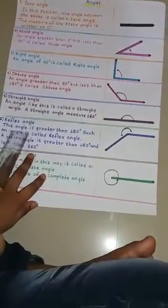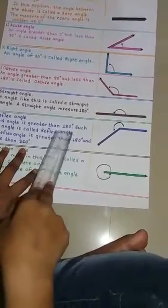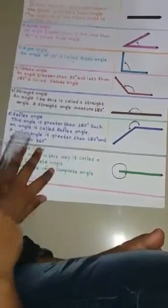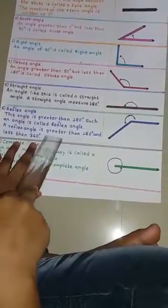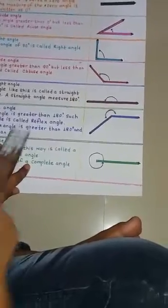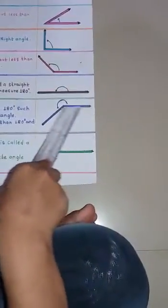6. Reflex angle. This angle is greater than 180 degrees. Such an angle is called a reflex angle. A reflex angle is greater than 180 degrees and less than 360 degrees. This is a reflex angle.